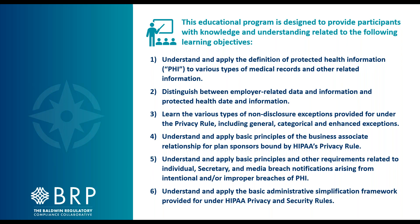Objective two: distinguish between employer-related data and protected health information — what's an employer file versus a PHI file under HIPAA. Objective three: learn the various types of non-disclosure exceptions provided under the privacy rule, including general, categorical, and enhanced exceptions. Objective four: understand and apply basic principles of the business associate relationship for plan sponsors bound by HIPAA's privacy rule. Under HIPAA, there's an entire regulatory process for how you allocate liabilities and responsibilities respecting the privacy of PHI to business associates and other entities you work with.